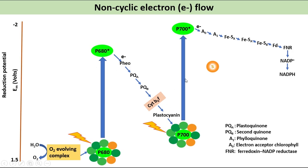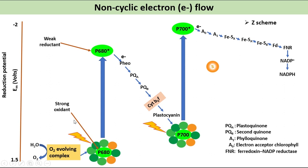The Z scheme shows the pathway of electron transfer from water to NADP in non-cyclic photosynthesis. One photon is required per electron in each photosystem. After excitation, high-energy electrons flow downhill through the carrier chain. Protons move across the thylakoid membrane during water splitting and during electron transfer through the cytochrome B6F complex, producing the proton gradient essential to ATP formation. P680 is a strong oxidant, and excited P680 is a weak reductant; P700 is a weak oxidant and excited P700 is a strong reductant.